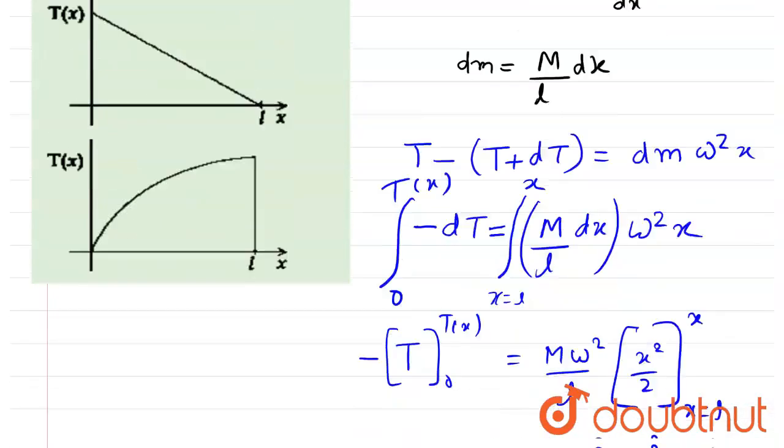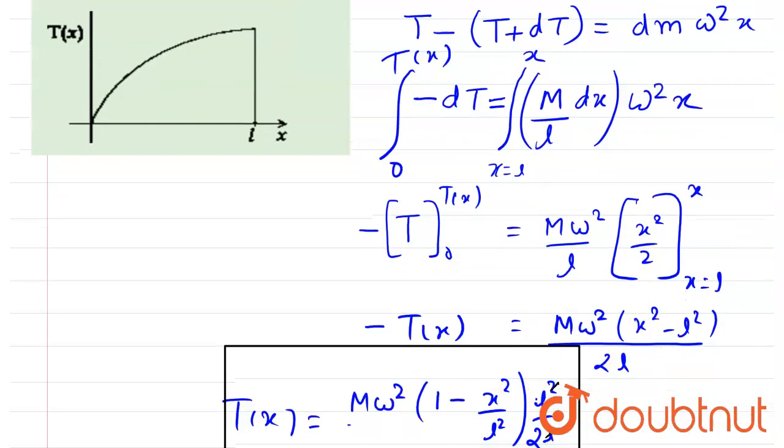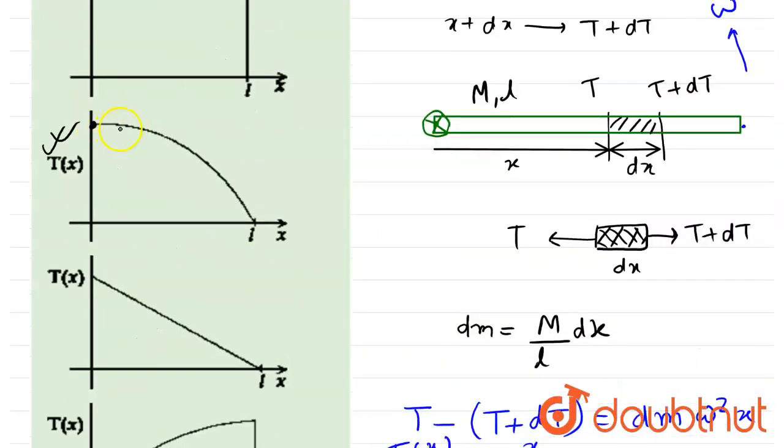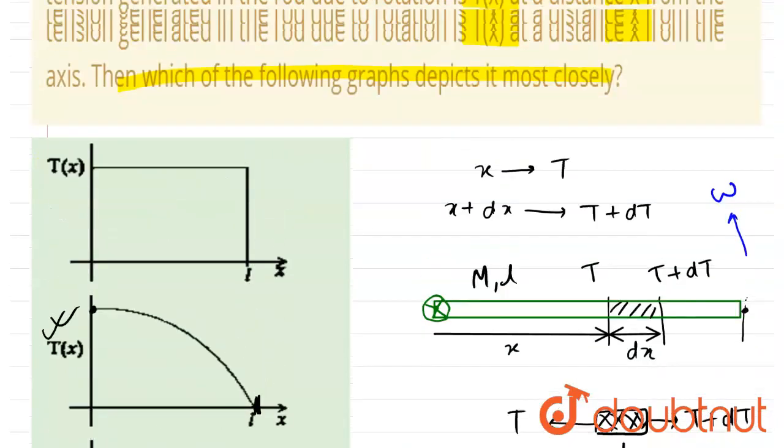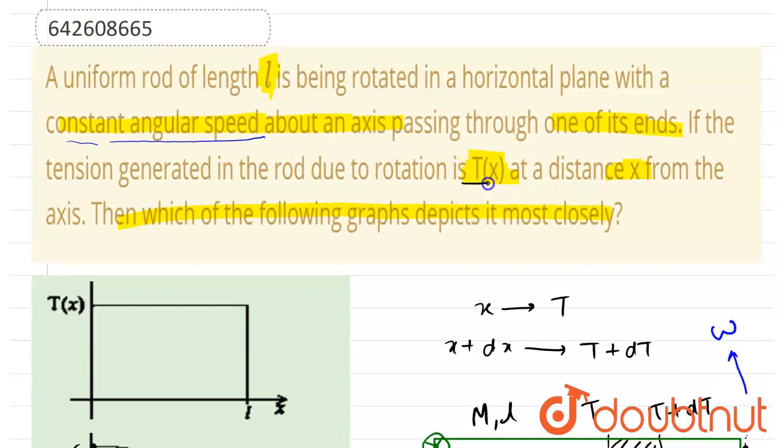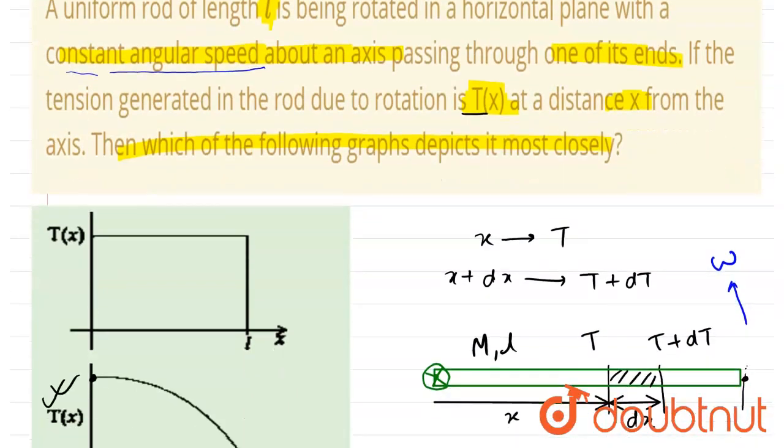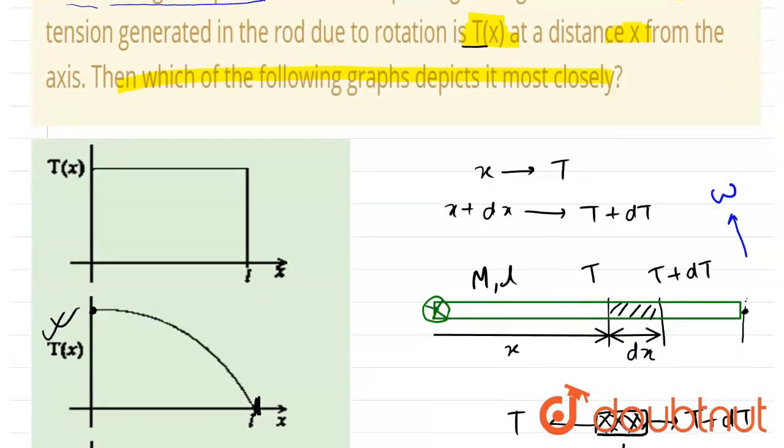At the hinge point, x equals 0 and the tension is maximum. The tension gradually decreases, and at x equals l the tension is zero. Since there is no mass at the end point, there is no need for centripetal force, so there won't be any tension. This will be the answer. We wanted T(x) as a function of distance from the axis of rotation, and we got option B as the answer.